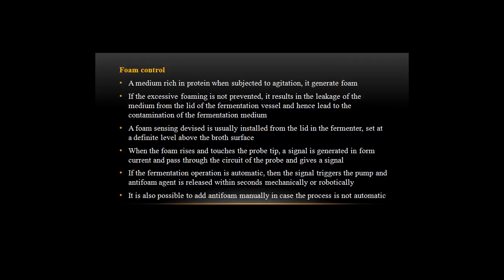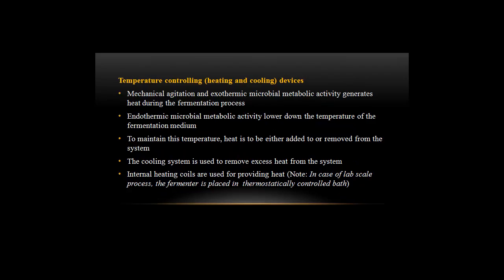Foam control: a medium rich in protein, when subjected to agitation, generates foam. If excess foaming is not prevented, it results in leakage of the medium from the lid of the fermenter vessel, leading to contamination. A foam-sensing probe is installed from the lid, set at a definite level above the broth surface. When foam rises and touches the probe tip, a signal is generated. If the operation is automatic, the signal triggers a pump and the anti-foam agent is released; otherwise, it can be added manually.